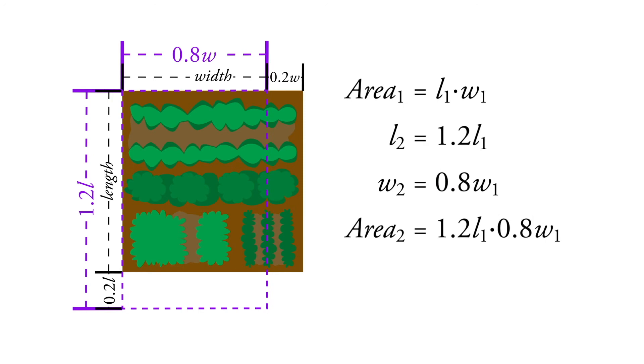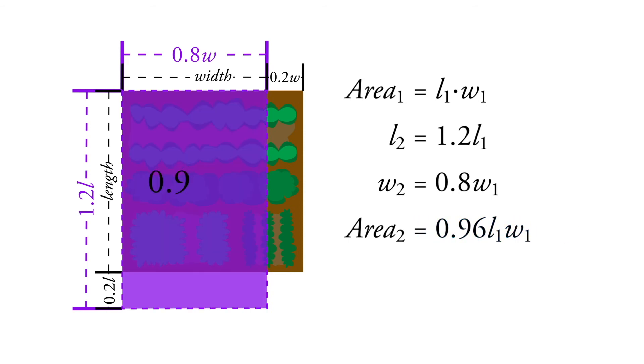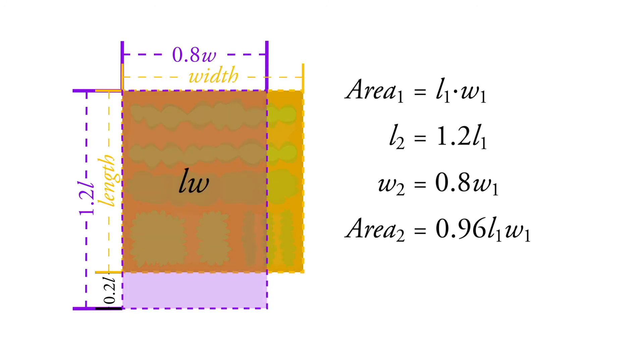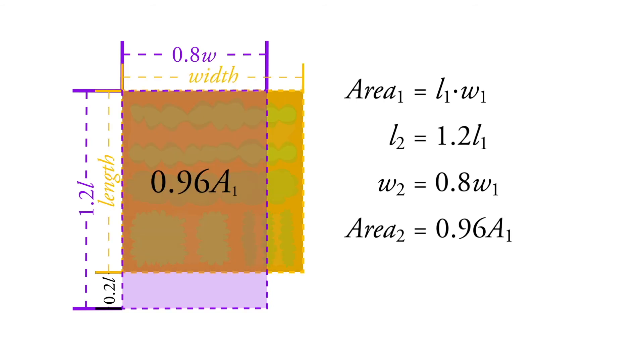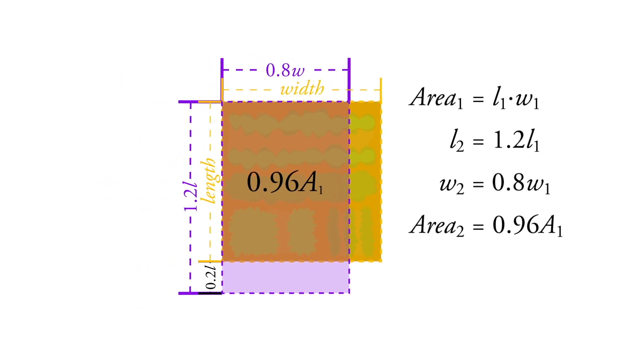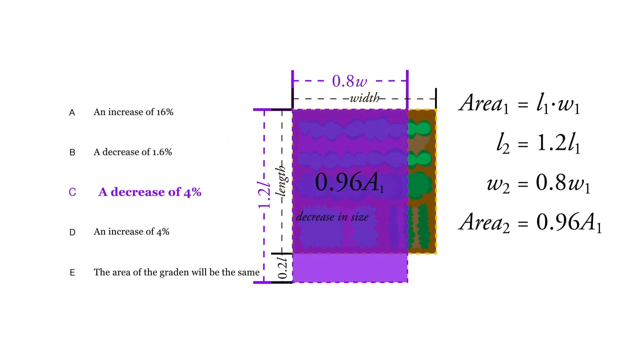And then we get an area, if we multiply this out, 1.2 times 0.8, we get an area of 0.96LW. And since LW is just the original area, our new area, our area 2, is 0.96 times our old area. So again, we have a decrease in size by 4%.